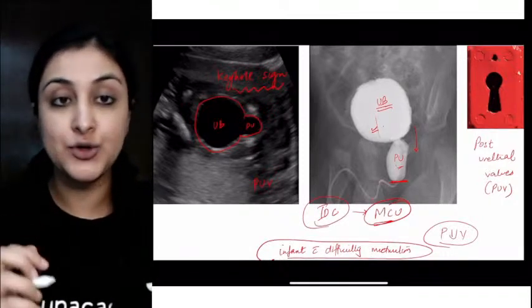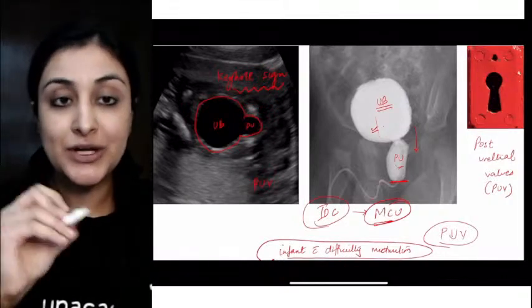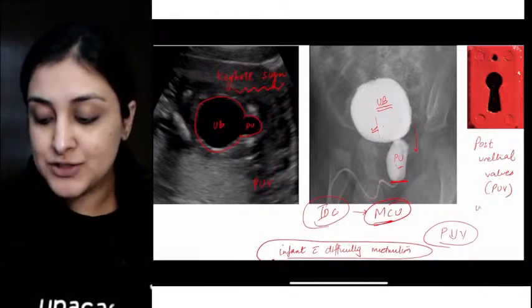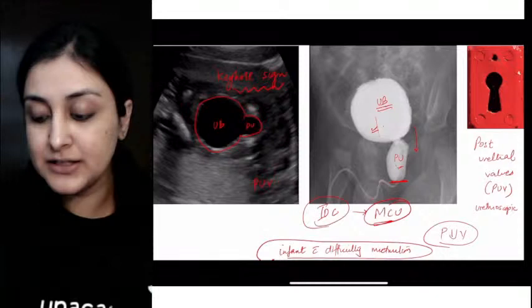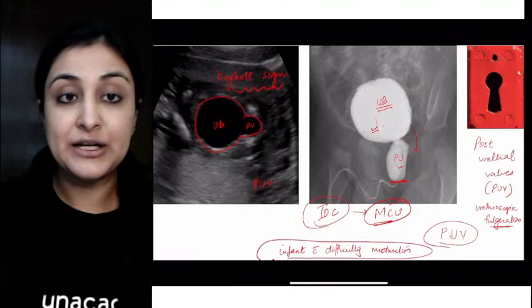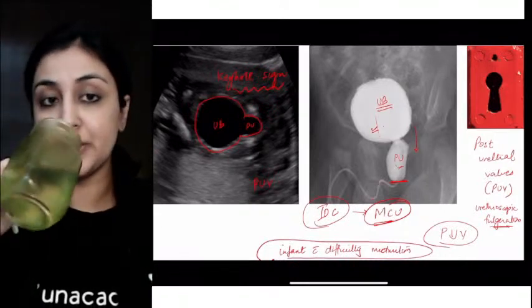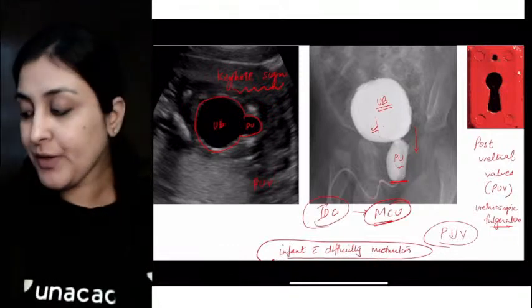Treatment is actually endoscopic. What they do is via the urethra they will go in. Through urethroscopy these valves are fulgurated. This is called urethroscopic or endoscopic fulguration of the valves. Fulguration is just a fancy term for obliterating or burning up the valves. So the valves would be removed. That is the treatment.